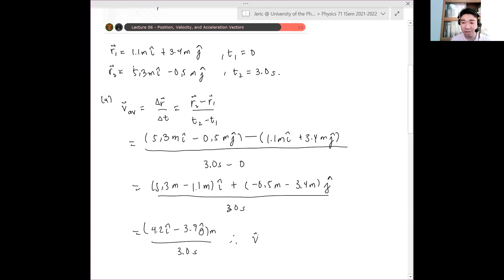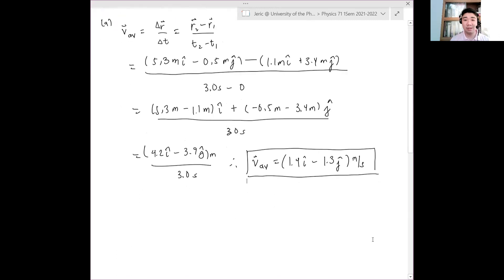And therefore, the average velocity is just 1.4 i-hat minus 1.3 j-hat quantity meters per second. That is the final answer. Got it?